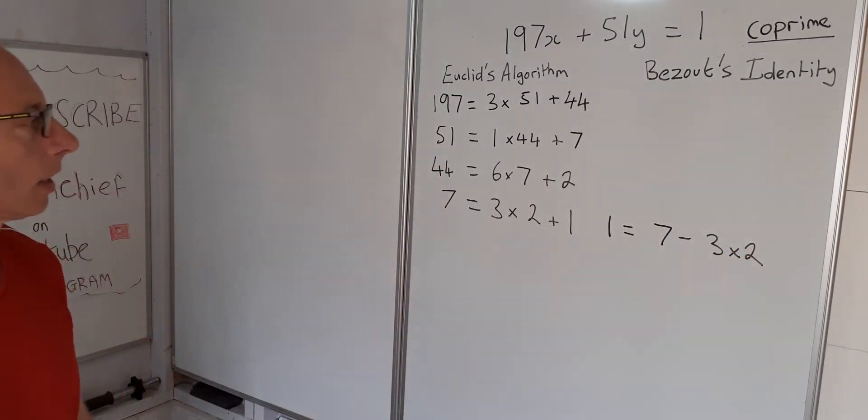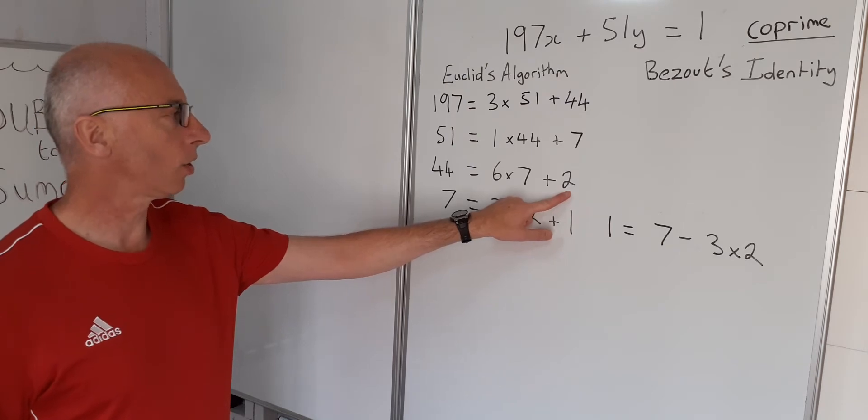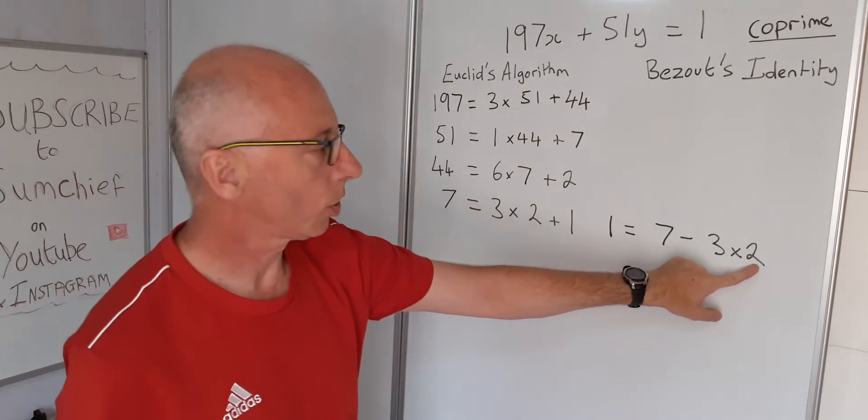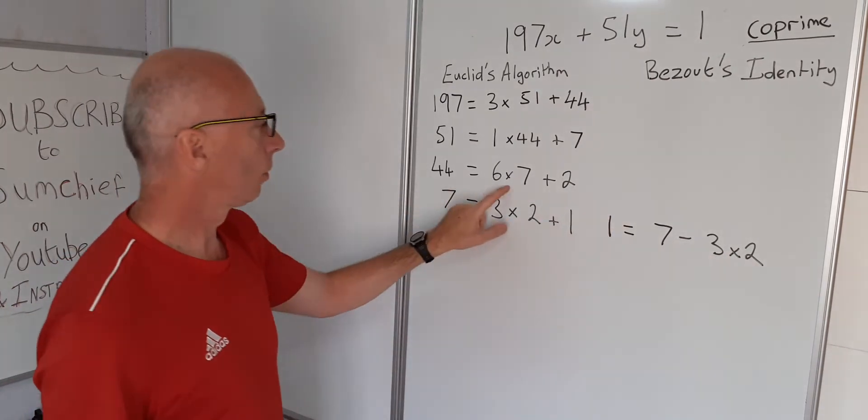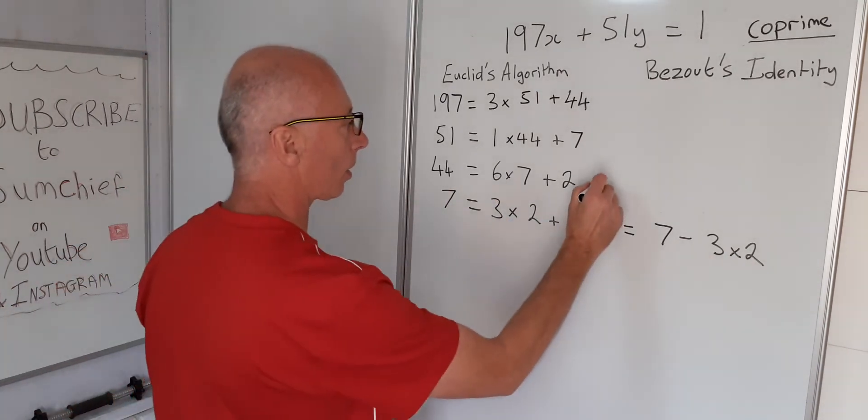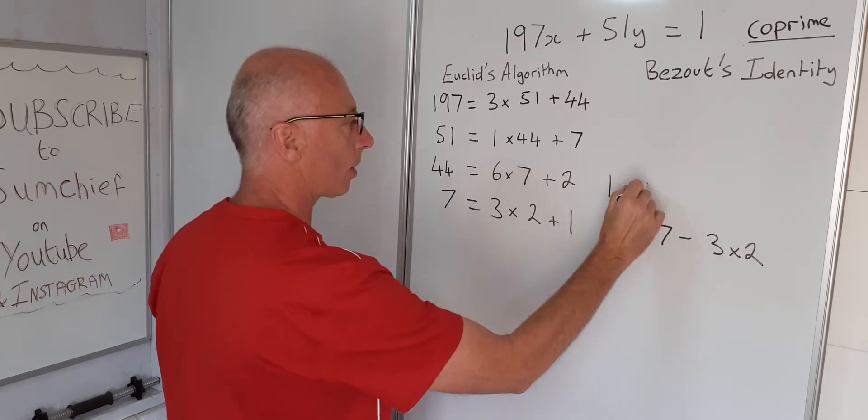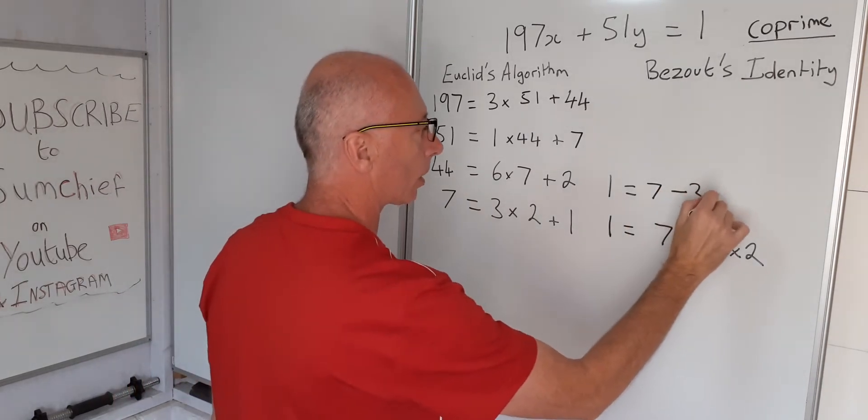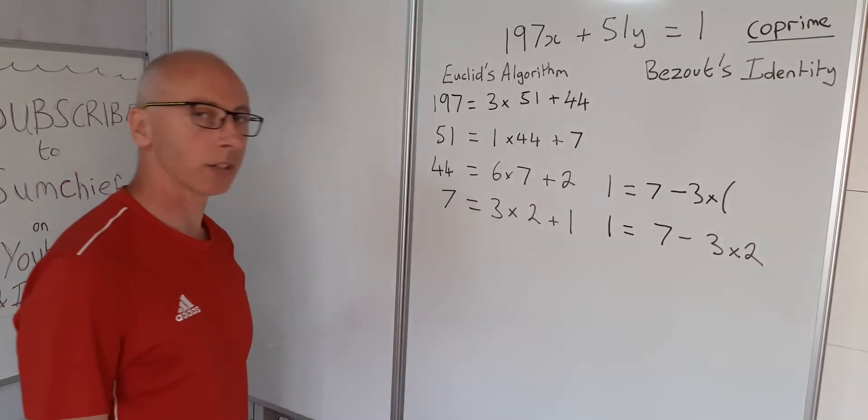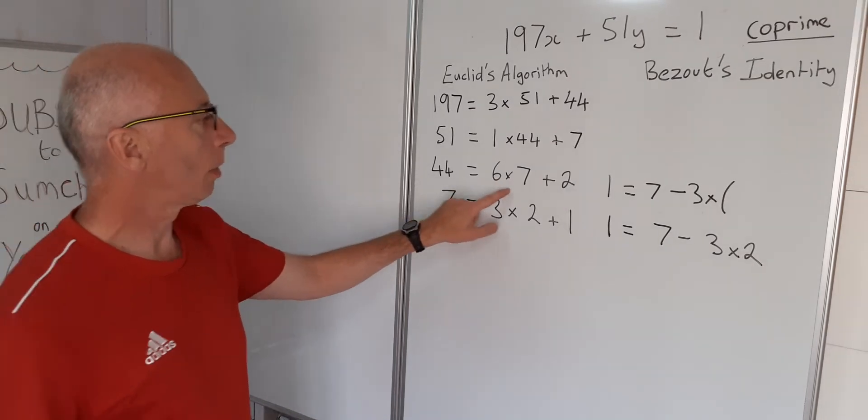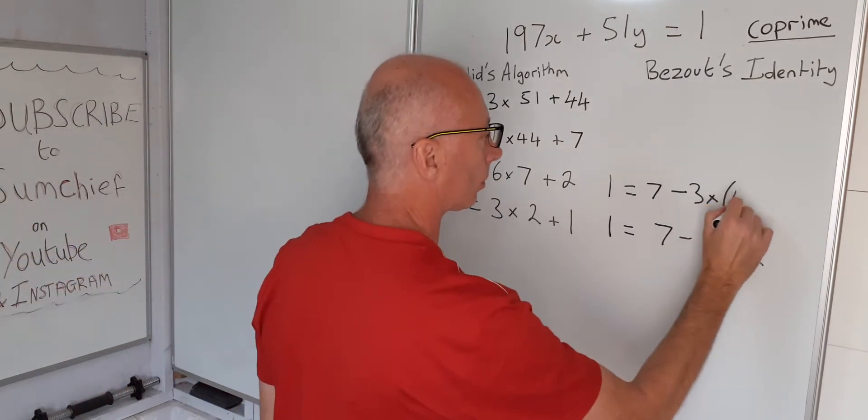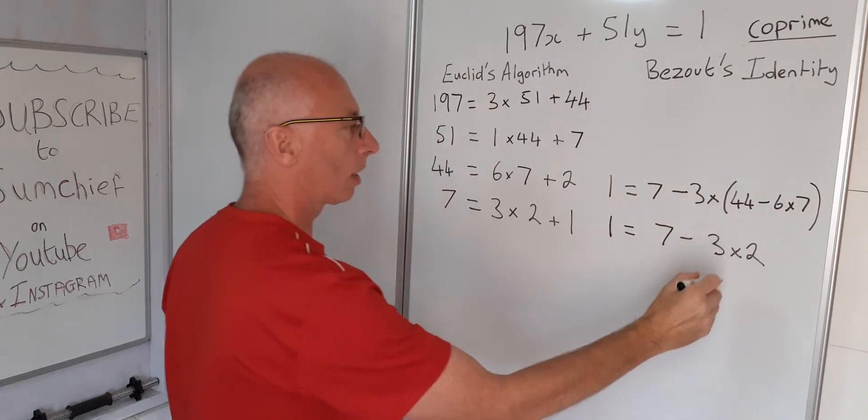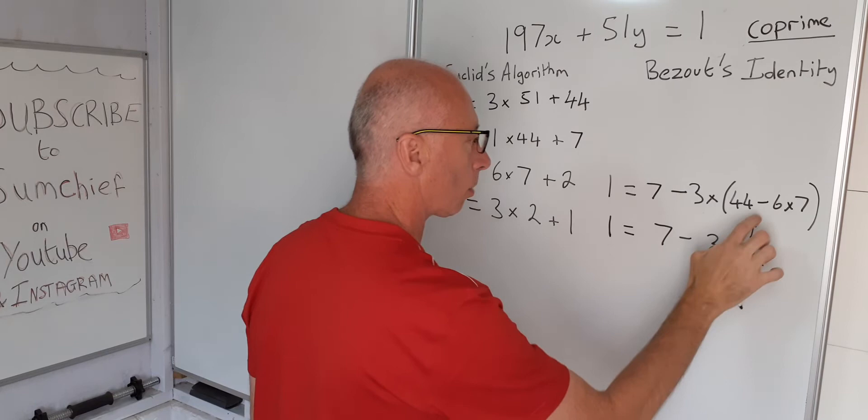Okay, so now what we have here, we know that 2 is 44 minus 6 times 7. So we substitute this 2 for these two values here. So now working in backwards form here: 7 minus 3 times, put a bracket there just to make life easier, 44 minus 6 times 7. And that will give us our 2, that's what we wanted here.